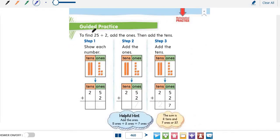Now, let's solve another example. Find 25 plus 2. To find 25 plus 2, we can show each number. 25 has 2 tens, and here we will write 2 in the tens place. Two rods. And 5 ones. These are the 5 ones for 25. So here we will write number 5.